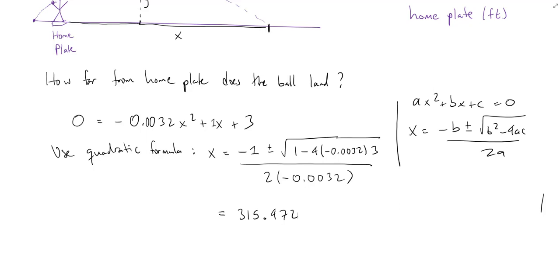So when I run it through my desktop calculator here, one of these looks like it is going to be, so the larger one is 315.472. OK? And that's maybe rounded a little bit. And the other one I get is negative, or negative 2.972.